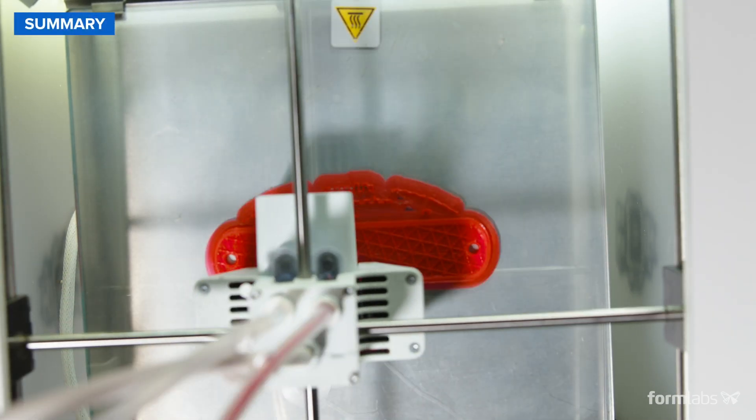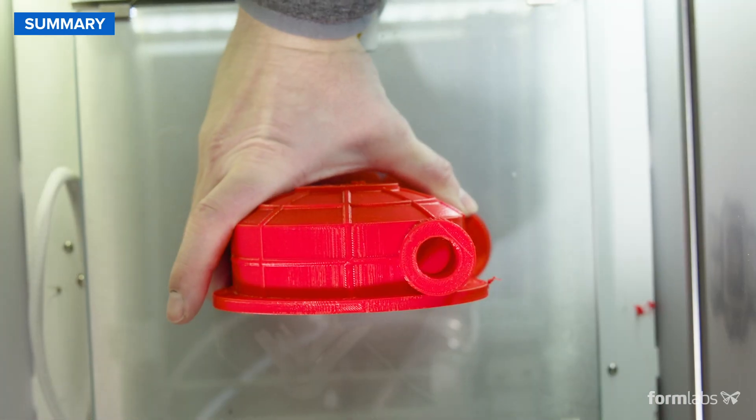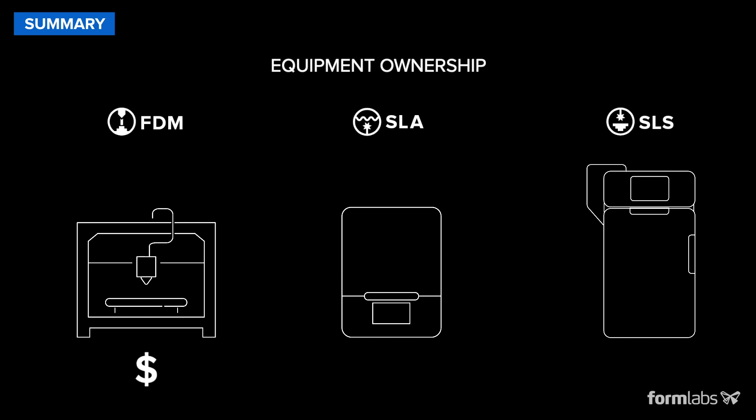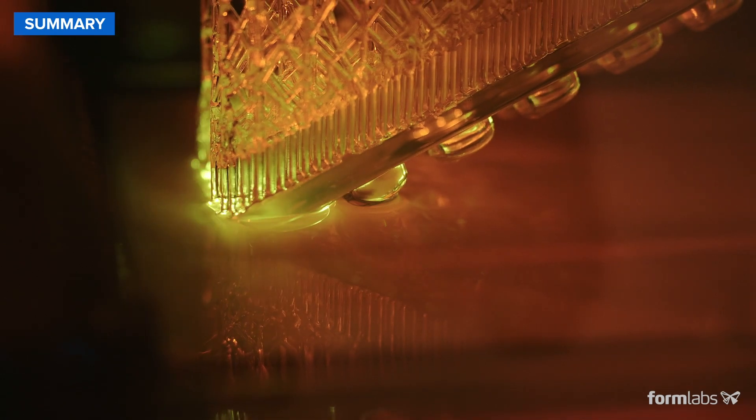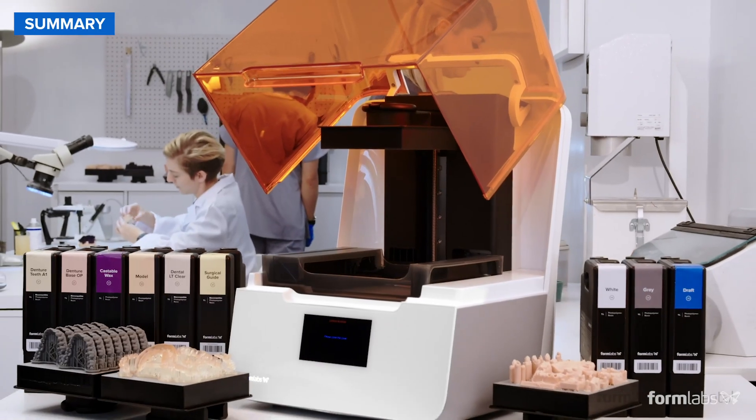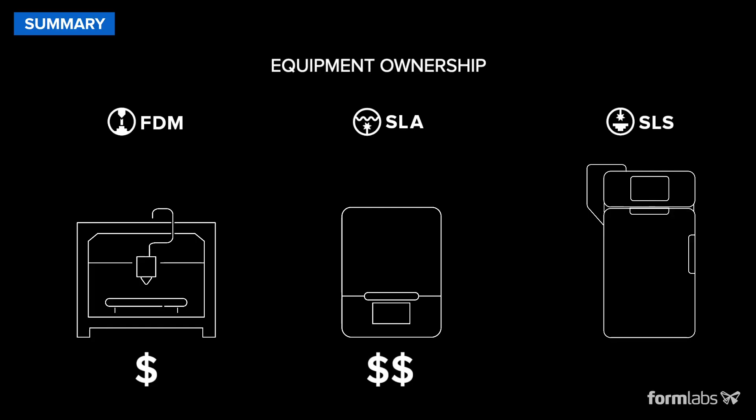To sum up, FDM will get you the cheapest parts if you're printing only relatively simple prototypes in limited numbers. SLA offers higher quality at a slight premium, but the difference quickly diminishes when you print complex designs or larger batches due to the less labor-intensive post-processing.